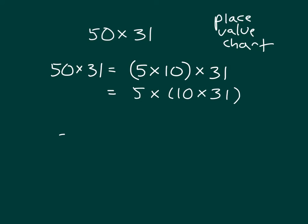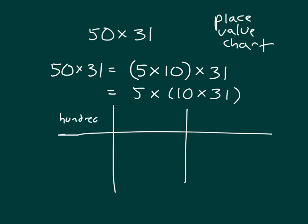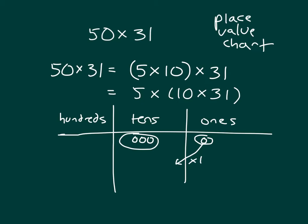Let's see what this looks like in the place value chart. We have hundreds, tens, and ones. We're working within the parentheses first, so it's going to be 10 times 31. We know how to do times 10, so we will model 31 first. Then multiplying by 10: each of those tens would be worth 100, and each of those ones is going to be worth a 10. So 10 times 31 is 310.